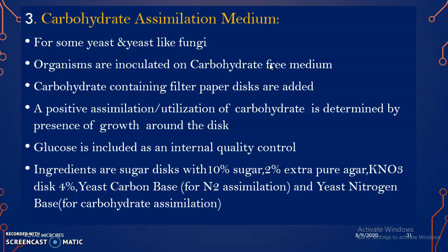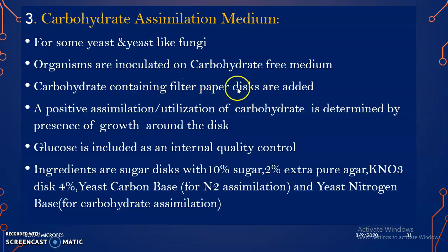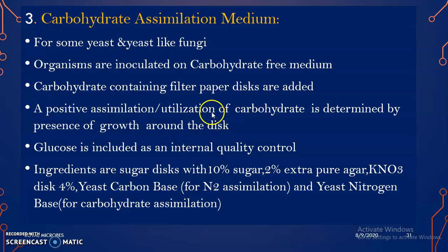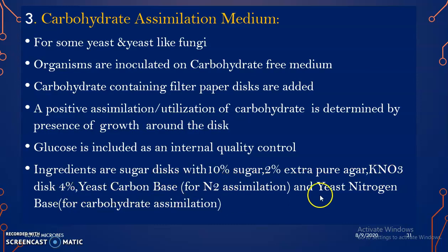The third biochemical medium is carbohydrate assimilation medium, used for some yeast and yeast-like fungus. Organisms are inoculated on this carbohydrate-free medium. Carbohydrate-containing filter paper discs are added to the medium, supplying carbohydrate in the form of filter paper discs. A positive assimilation or utilization of carbohydrate can be determined by the presence of growth around the disc. Glucose is included as an internal quality control. Ingredients are sugar discs with 10% sugar, 2% extra pure agar, potassium nitrate disc, yeast carbon base, and yeast nitrogen base.